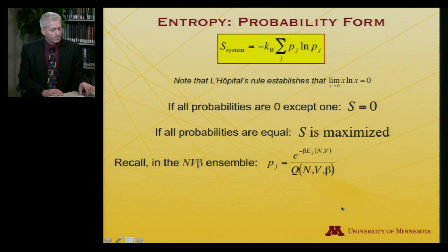But what I want to focus on now is that, remember, in the NVβ ensemble, or NVT, remember that beta is just one over kT, in that ensemble, we had a way to define the probability. It's e to the minus beta times the energy, sub j, divided by the partition function, which is the sum over all possible exponentials, all possible energies, that is.